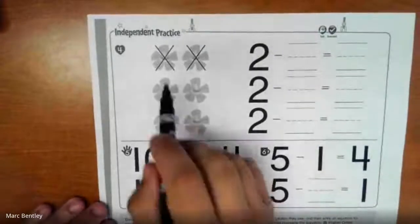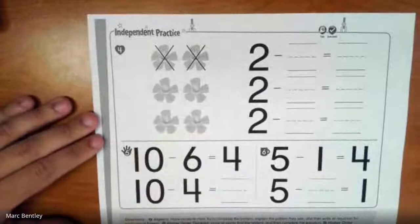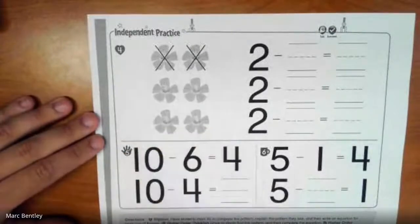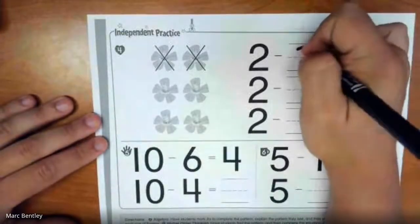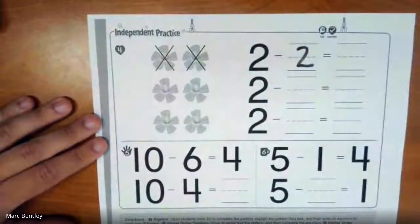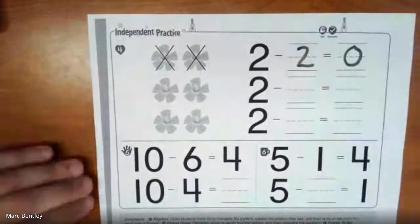All right. So up here with our flowers. So we had 2 to start with, but then we're taking both of them away. So 2 minus 2 equals 0. We got none left.